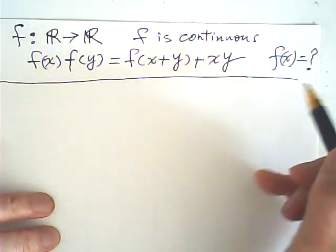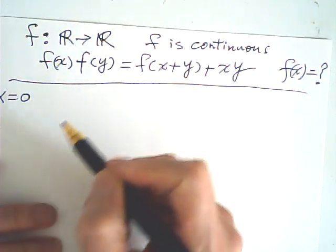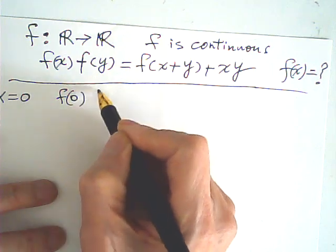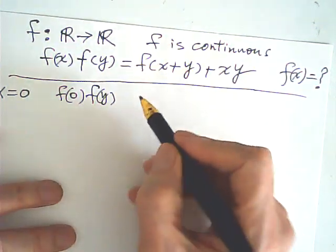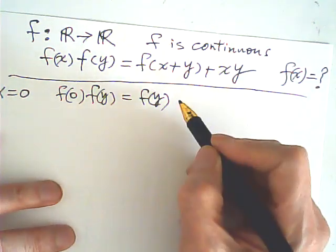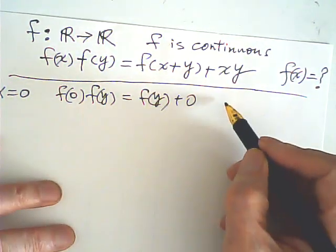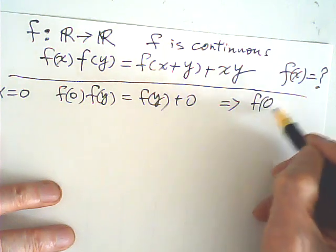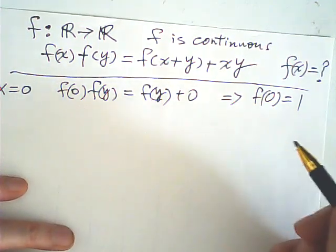First, if x equals 0, then f(0) times f(y) is equal to f of y plus 0, which is just f(y). Therefore, f(0) equals 1. That's the first conclusion.